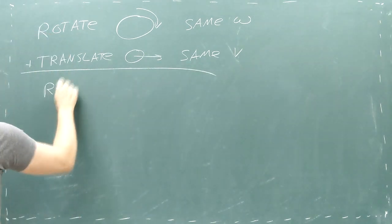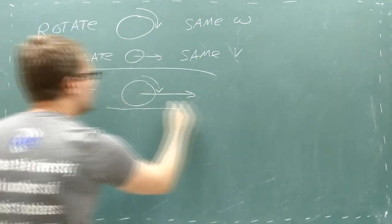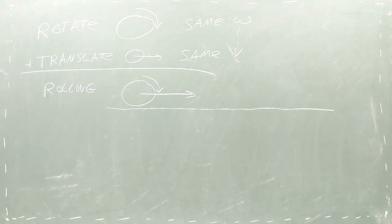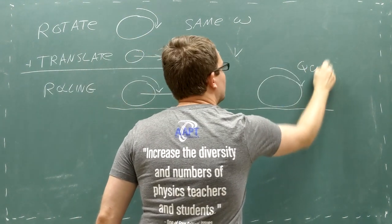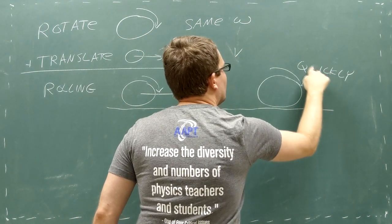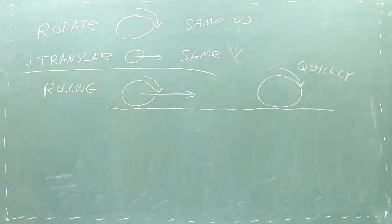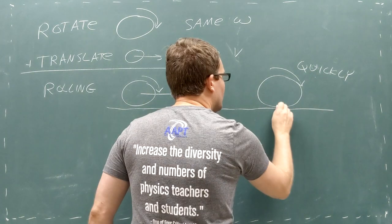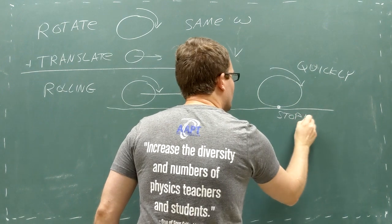When you combine these two types of motion, you can describe a wheel rolling along the ground. As the wheel turns, the particles at the top of the wheel move quickly, while the particles at the bottom temporarily come to a halt, maintaining contact with the ground. The resulting motion keeps the wheel moving forward while it rotates.